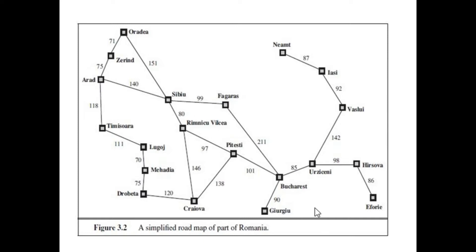For example, if I mark Arad as the initial state and Bucharest as our final state, then we need to find how we can move from this initial state to Bucharest. The value 140 represents the cost or the distance between two cities, so this is the cost of our action. This is a very interesting problem which we will also discuss during our problem-solving techniques topic.